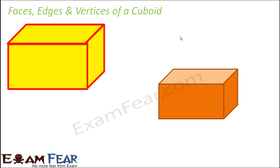With this, what we understand is whenever we talk about a three-dimensional shape, we don't just talk about angles, sides, and vertices, because there is a lot more to that in a three-dimensional object. The basic parts of any three-dimensional object are faces, edges, and vertices.